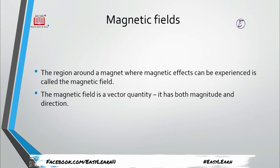Today's topic is magnetic fields. What is meant by a magnetic field? A magnetic field is basically the region around a magnet where a ferromagnetic material feels an attraction, or where a deflection of a compass is observed. The region around a magnet where magnetic effects can be experienced is called the magnetic field of that magnet.